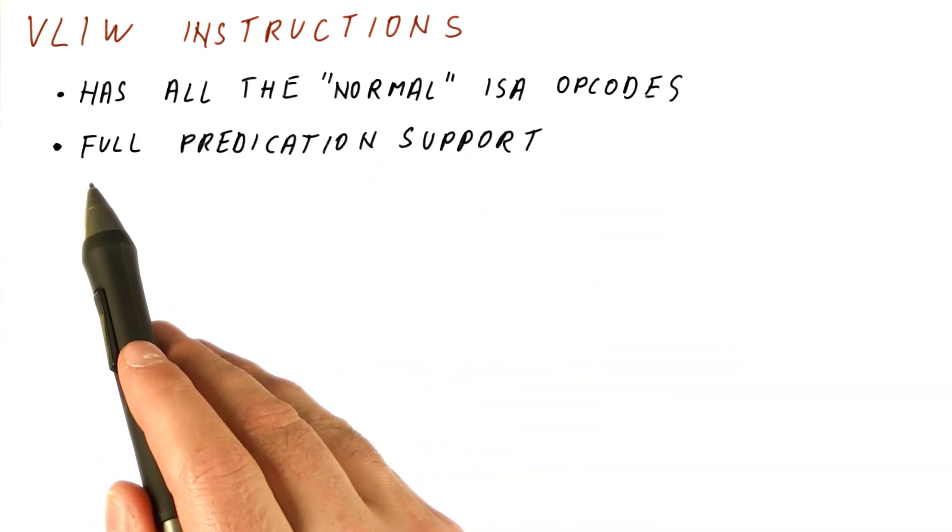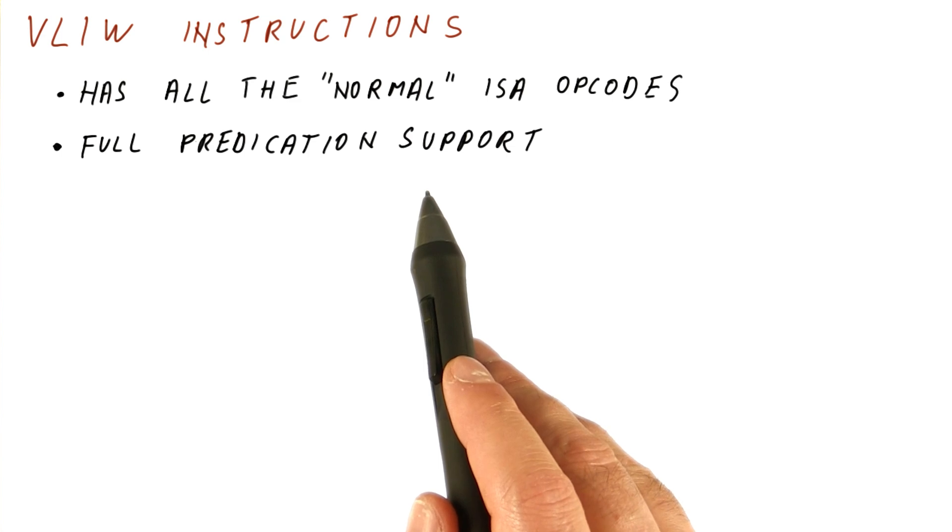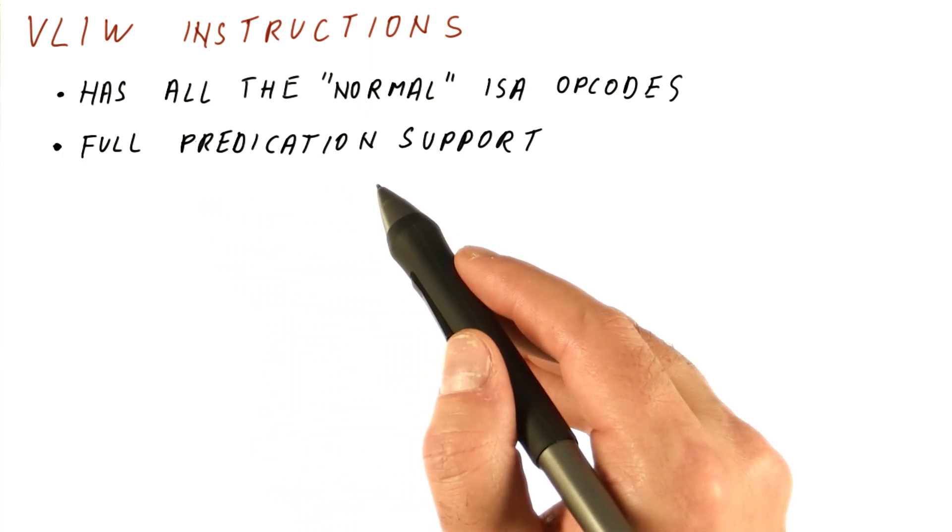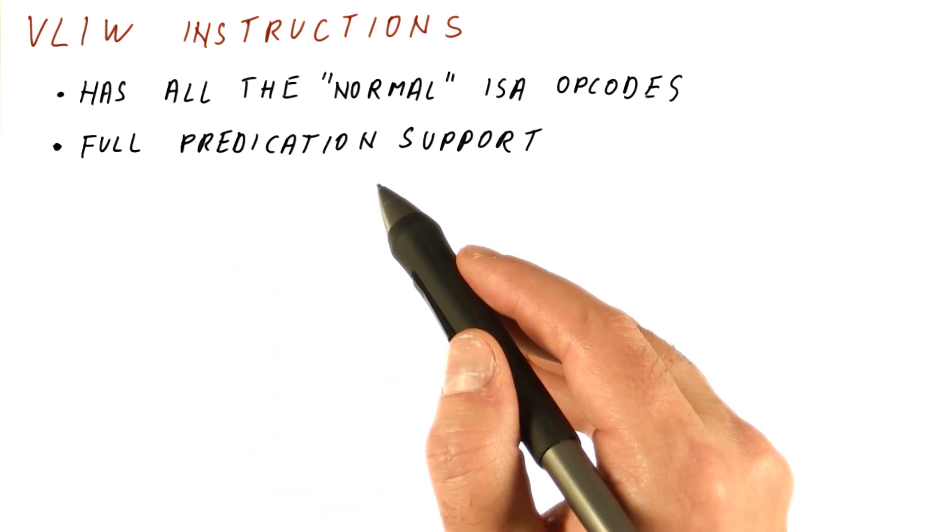A typical VLIW processor will also have support for full predication or at least very extensive predication support. This is because it relies on the compiler to expose parallelism. One of the ways the compiler does that is through scheduling instructions. So we really want the compiler to be able to predicate and thus expose more opportunities for instruction scheduling.